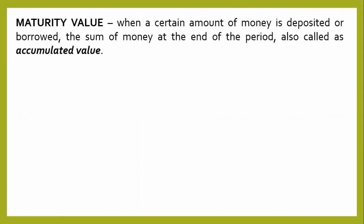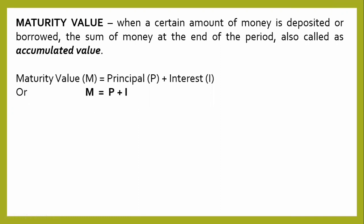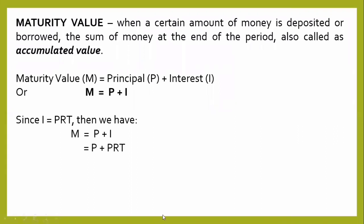Now let's move to maturity value. The maturity value is the sum of money at the end of the period when a certain amount is deposited or borrowed — also called the accumulated value. If M is the maturity value, then M is equal to P plus I. Since I is equal to P times R times T, substituting gives M is equal to P times the quantity 1 plus R times T.